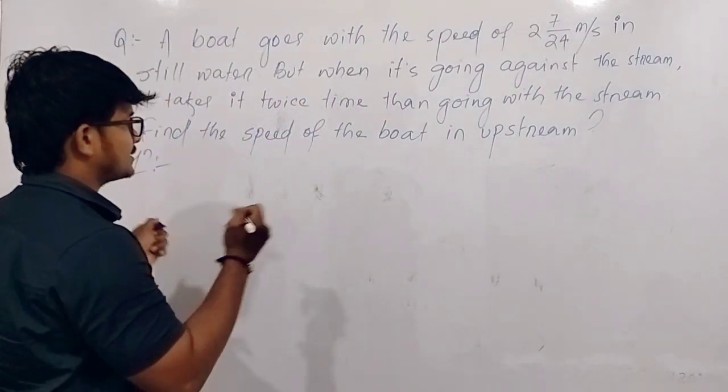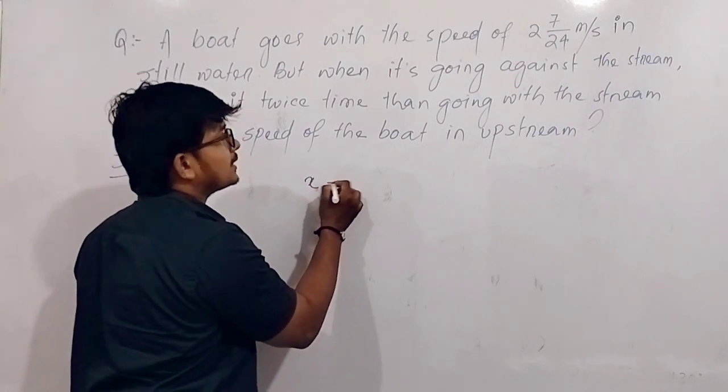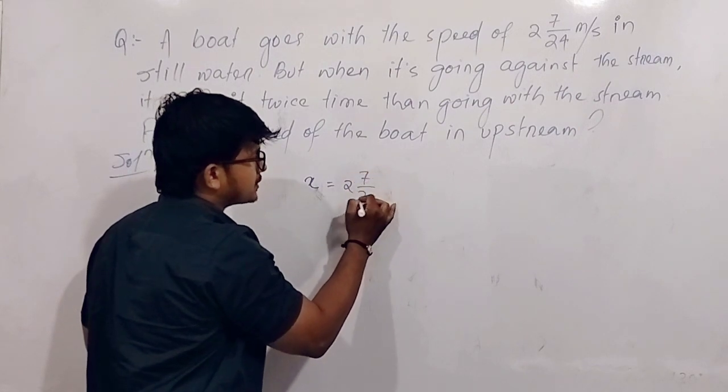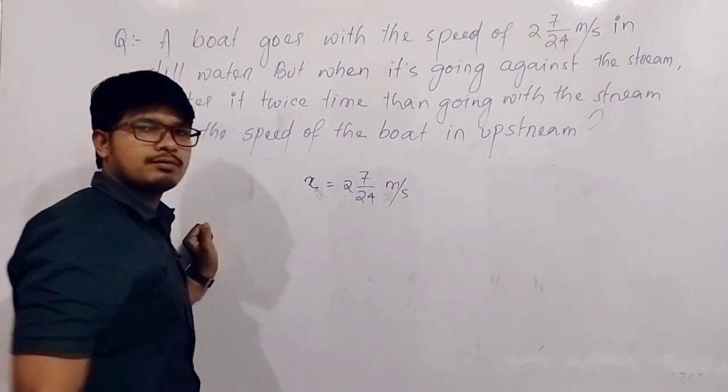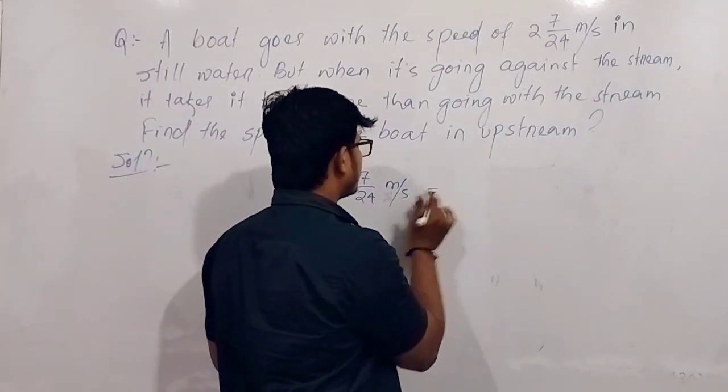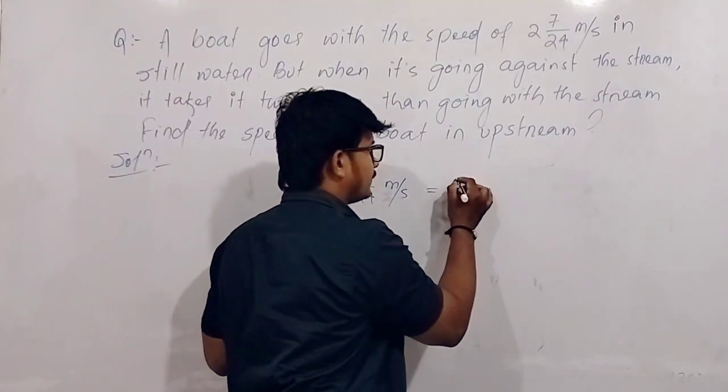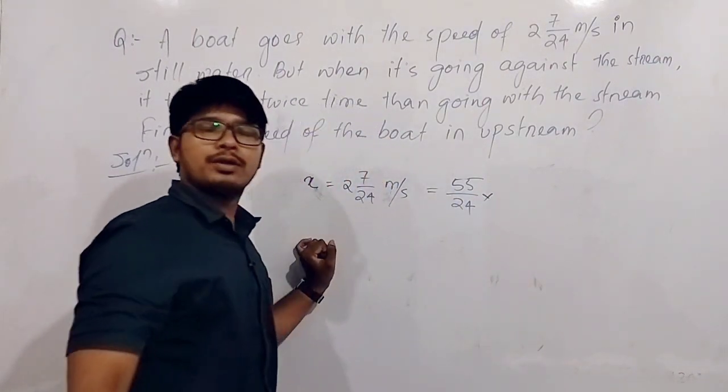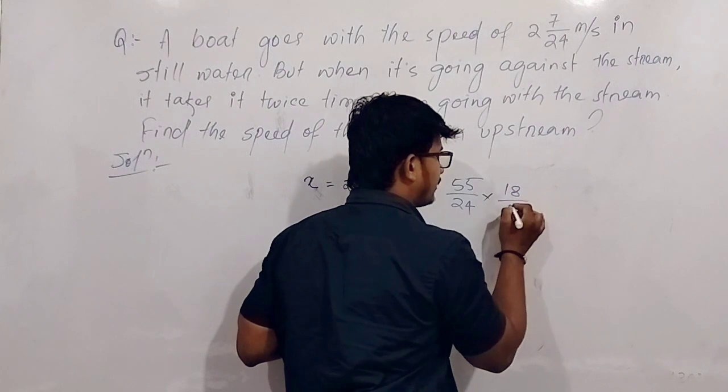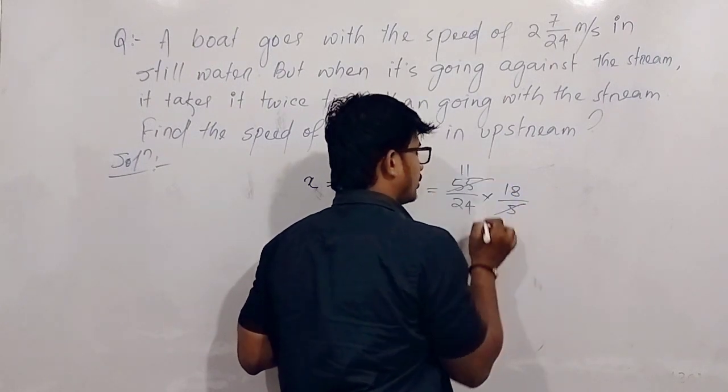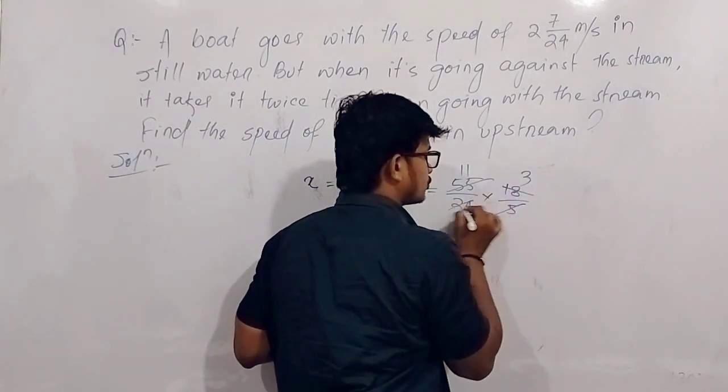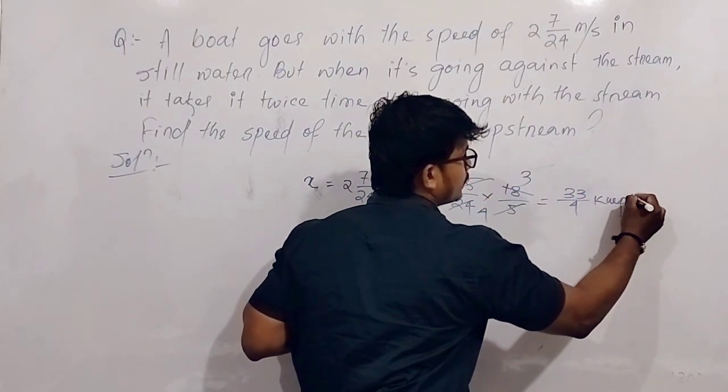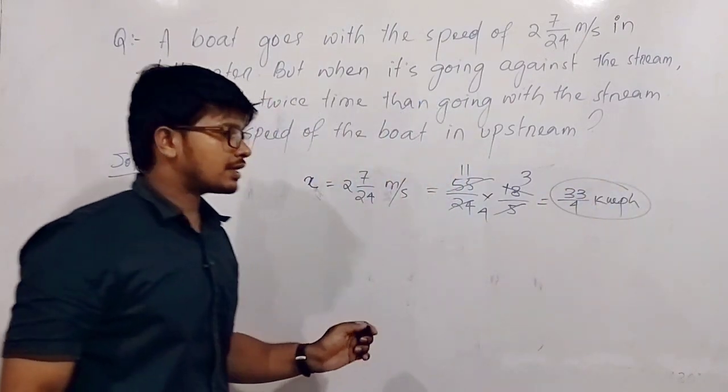It is given that x is 2 and 7/4 meter per second. So 2 and 7/4 meter per second, you convert to kilometer per hour. To convert meter per second to kilometer per hour, multiply by 18/5. After canceling you get 33/4 kilometer per hour. First thing we got.